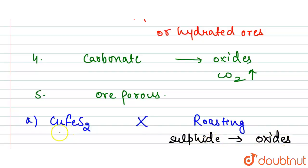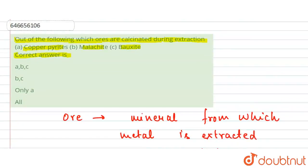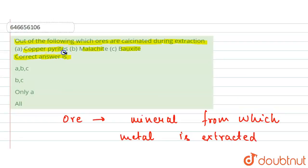It is first concentrated by froth flotation process. So it will not be our answer because it involves roasting. Now next is malachite.